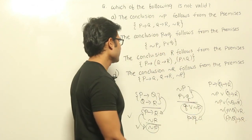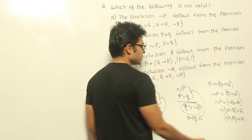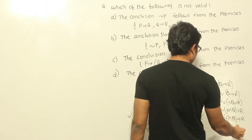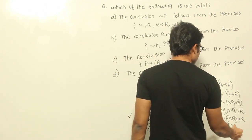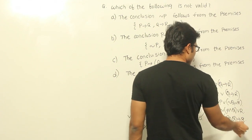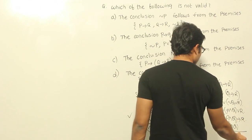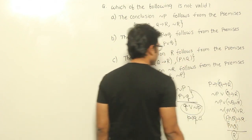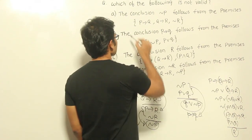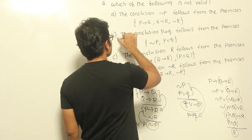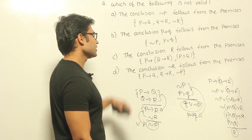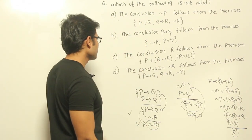If we see that P and Q is given as a premise, and this implication holds, then we can definitely conclude R. Therefore option C is definitely true and valid. So options A, B, and C are all valid.